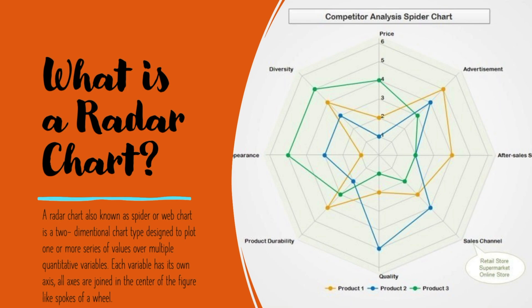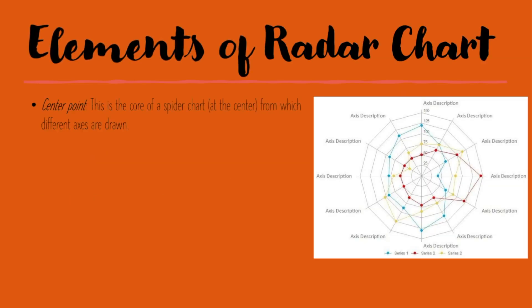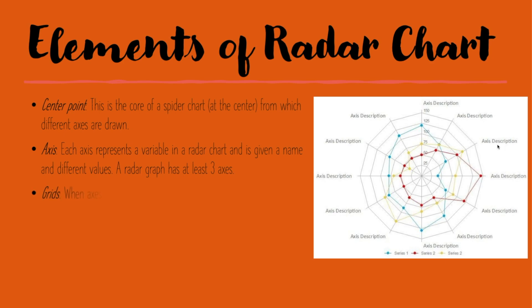For better understanding let's look into the elements of radar chart. There are four different elements. The first one is the center point — as the name suggests it's the core of the spider chart from which different axes are drawn. The second one is the axis. Each axis represents a variable in the radar chart. So if we are comparing employee data, we can talk about different salaries, their performance and so on. In a radar chart we need at least three axes.